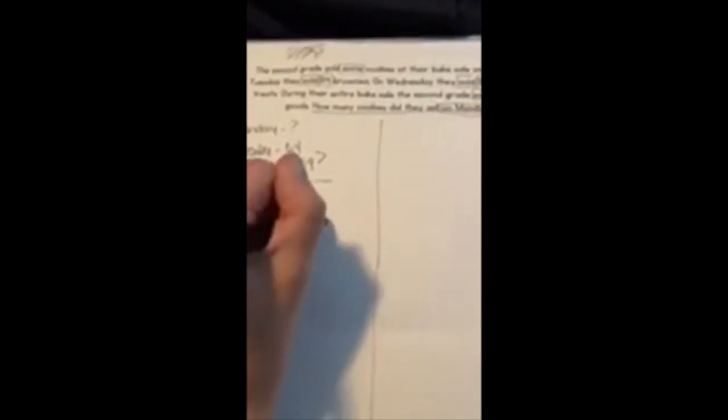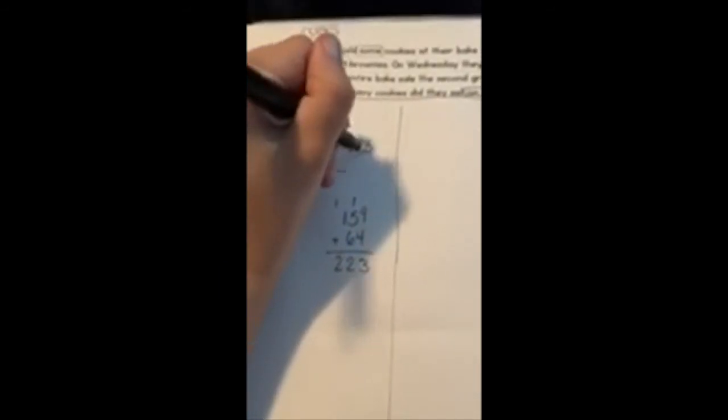And I know that my total for all those days has to come out to 341. So those are the three numbers that they gave me and I need to figure out that missing one. So one way that I could do this is I could see, well, how much did they make on Tuesday and Wednesday? So I could add them. So let's go ahead and add 159 plus the 64 to see how many they made on those two days combined. So nine plus four, 13. Carry that one up. One plus five, six. So six plus six, 12. Carry the one. One plus one, two.